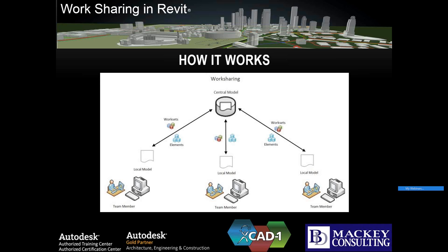When you start work sharing, there will be a central model created when you set up work sets in a project. Once that's set up, every user copies that file from the server down to their local machine. You work on your local machine, and it communicates with the central model — checking out pieces of the model you need to work on. There is a ton of communication happening between your computer and the server.